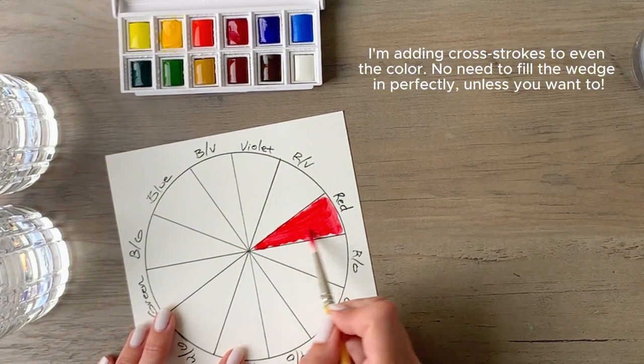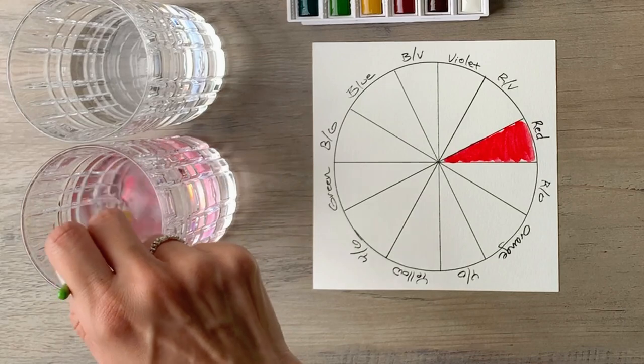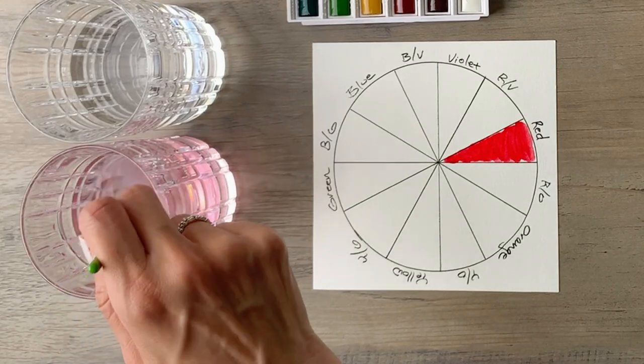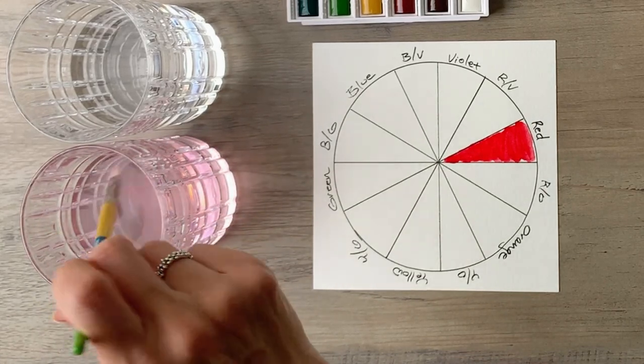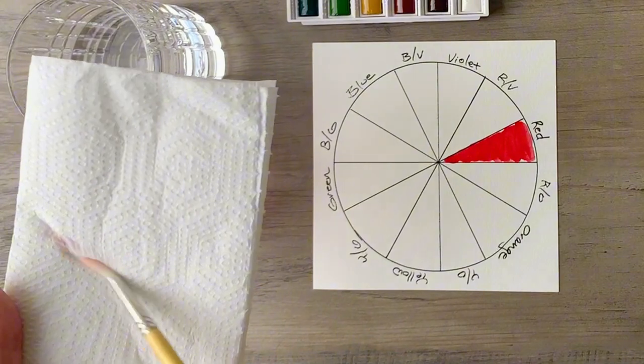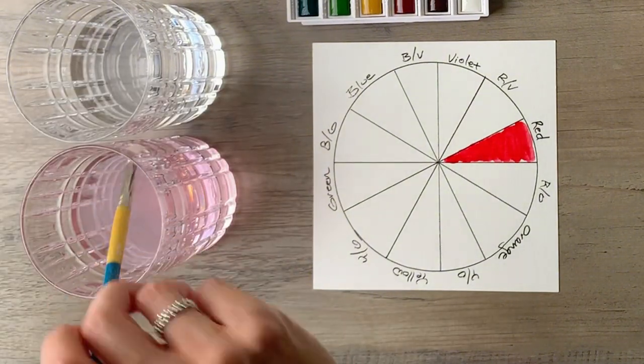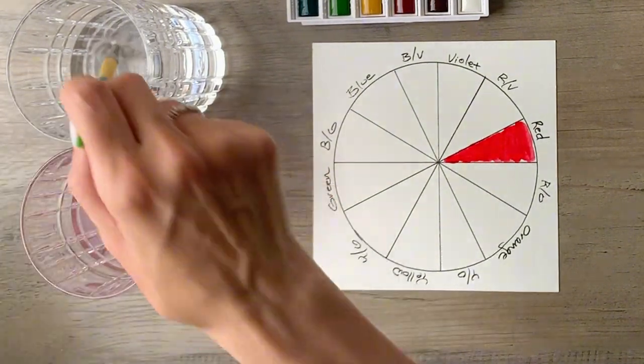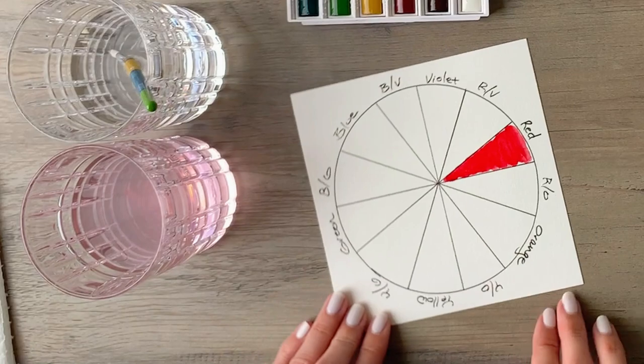Then you'll clean off your brush. Use one of the two glasses of water to rinse most of the color out of your brush. Wipe it off on a paper towel to make sure you got all the color out. And once you've done that, you'll dip it into your clean water and then go back into your paint.